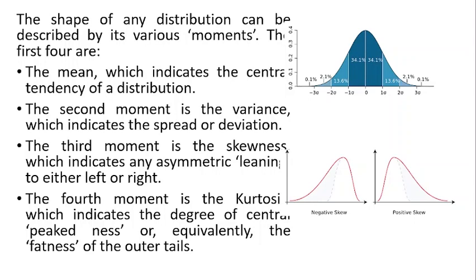The third moment is skewness, which indicates any symmetric leaning to either left or right. The fourth moment is kurtosis, which indicates the degree of central weakness or equivalently the fatness of the outer tails. In my channel there is a separate documentary on skewness and kurtosis which can be separately viewed.